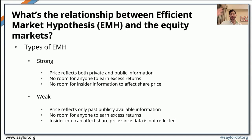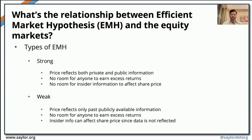We can measure the efficient market hypothesis in three ways: strong, weak, and semi-strong. In a strong efficient market, all publicly available data and all private data have been shared, and prices reflect both. In situations like these, there isn't any room for someone to make excess returns on the basis of having information unavailable to other investors — the room for insider information affecting share price is essentially null.